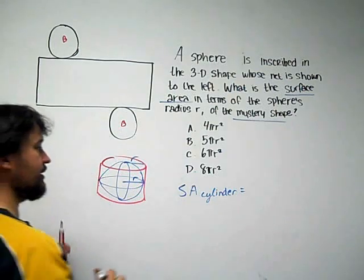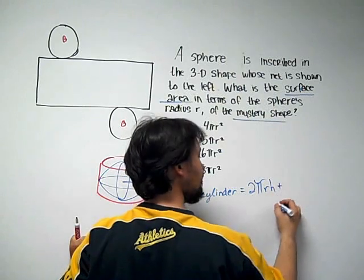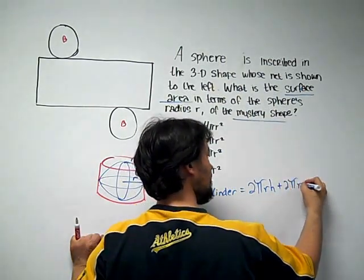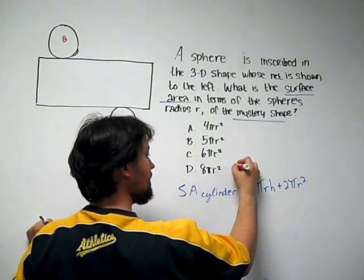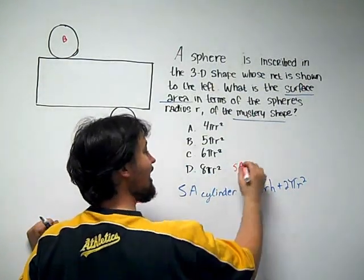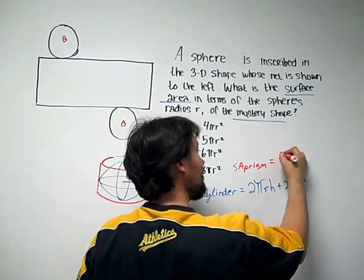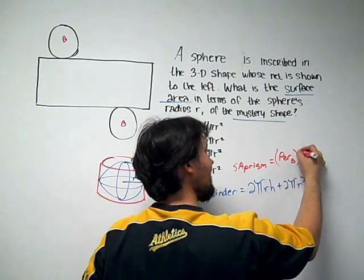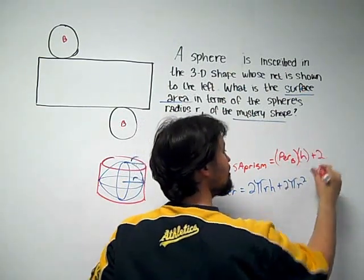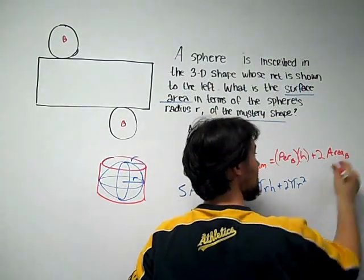Well, the surface area of the cylinder is 2 pi r h plus 2 pi r squared. Remember, the way that we memorize this is we talk about the surface area of any prism, and a cylinder is just a circular prism, is perimeter of the base times the height of the shape, plus 2 areas of the base.